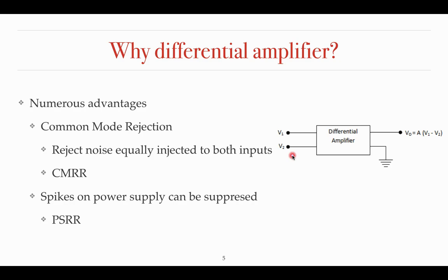The most important property of the differential amplifier is common mode rejection. Common mode rejection means it will reject the noise equally injected to both inputs. Since this is a memory cell, many noises will affect the input lines like bit as well as bit bar lines, and these noises will be rejected by our differential amplifier. Common mode rejection is measured by a parameter called CMRR, common mode rejection ratio. Also, we can suppress the spikes on power supply, which can be measured by another factor called PSRR, power supply rejection ratio.